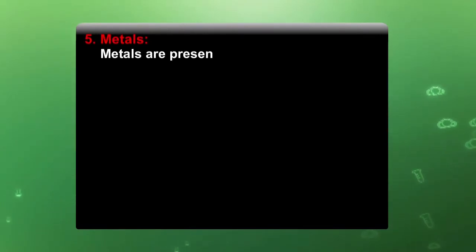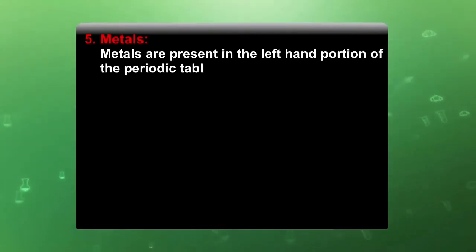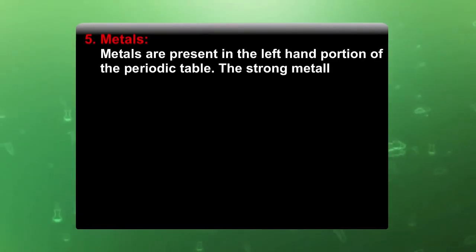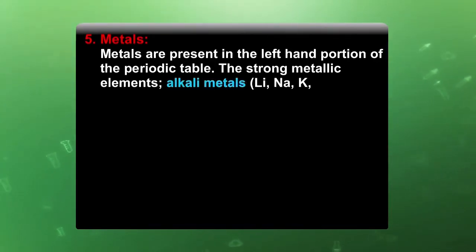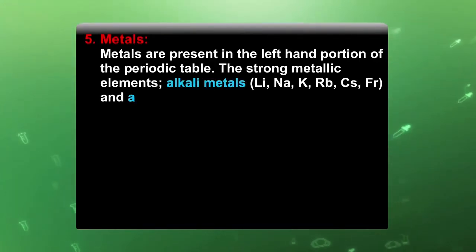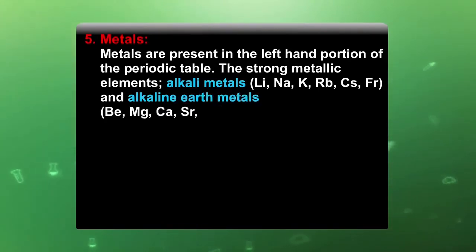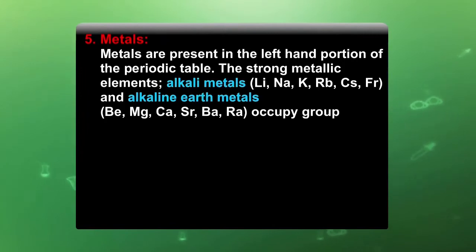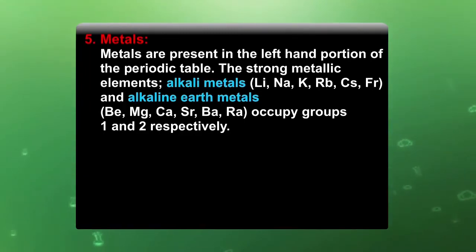Metals are placed in the left-hand portion of the periodic table. The strong metallic elements — alkali metals like lithium, sodium, potassium, rubidium, cesium, and francium — and alkaline earth metals — beryllium, magnesium, calcium, strontium, barium, and radium — occupy groups 1 and 2 respectively.